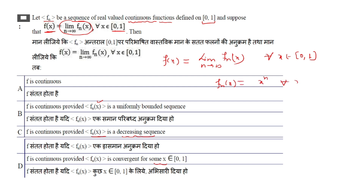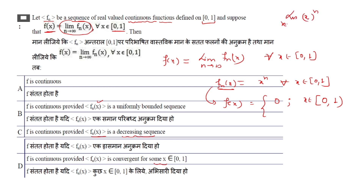With Fₙ(x) = xⁿ: for x in [0, 1), the limit F(x) = 0, and at x = 1 the limit is 1. So F(x) is 0 on [0,1) and 1 at x = 1, which is not continuous at x = 1. Even though each Fₙ is continuous, the pointwise limit F is not continuous. So option A (F is always continuous) is incorrect.